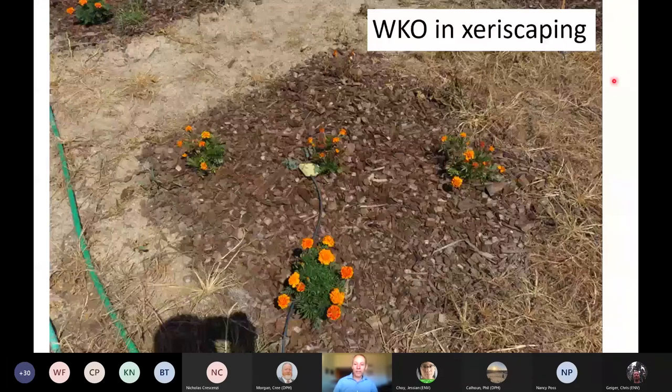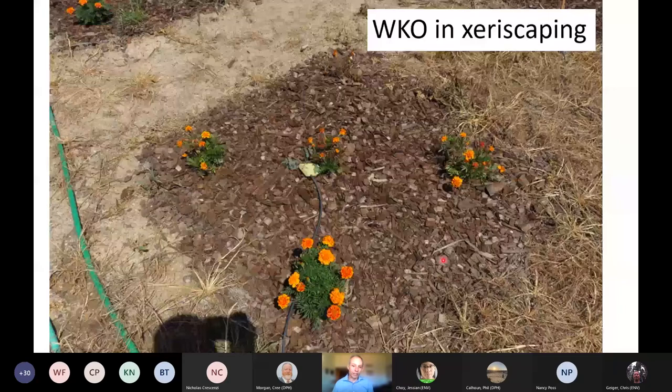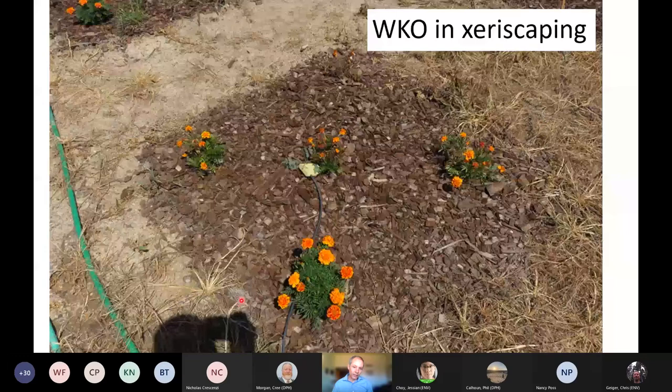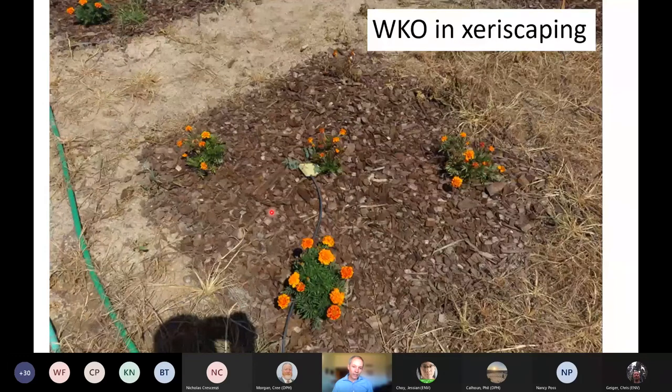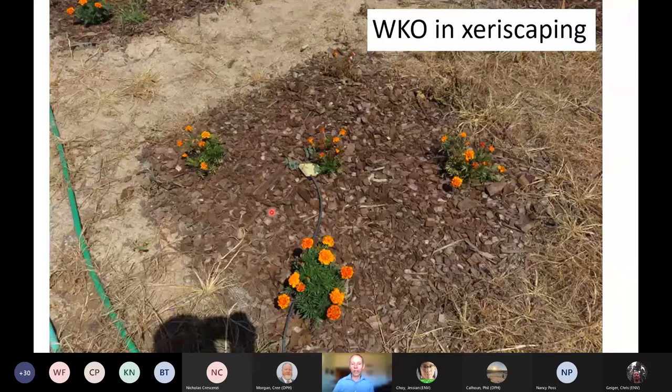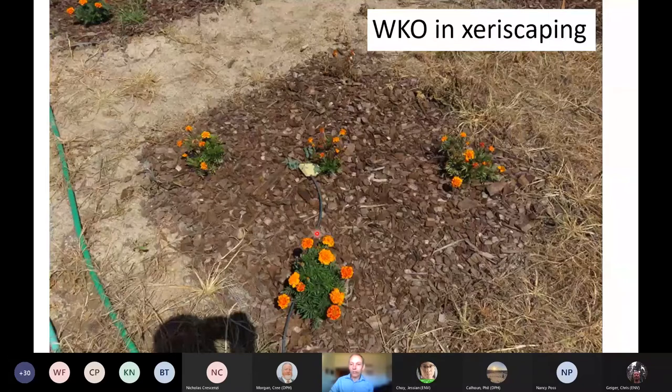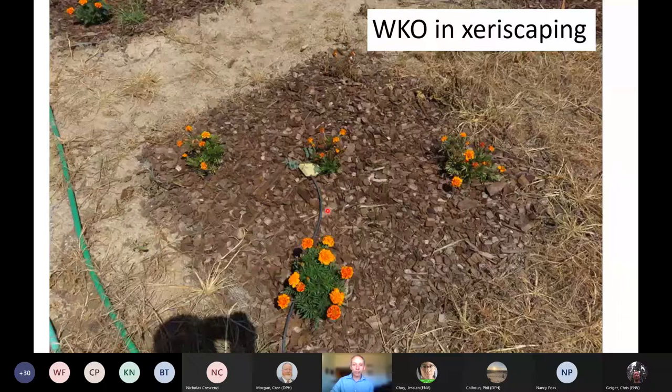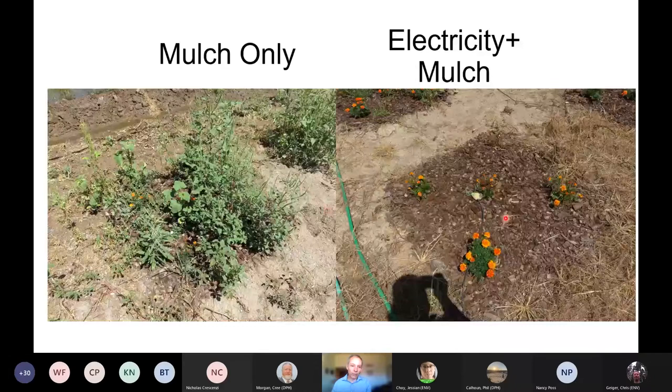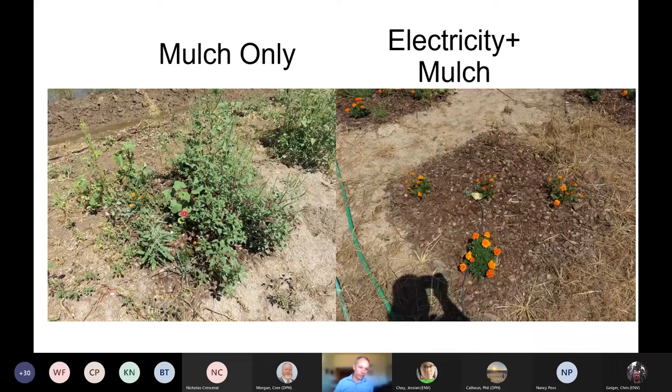Okay, so imagine that screen that you just saw over the pot of barley, and now we're using that outside in a real application in xeriscaping. So down here you can see a little bit of screen that's exposed. This is covered up with mulch, and we're preventing weeds from growing into this plot. We have some marigolds planted in little holes that are cut out in the screen, and this thing in the middle is just a soil moisture probe that's going in there. So that's one way that we've been using it. Here's, this is the same picture on the right, but this is a plot with only mulch in it. So just to demonstrate that it is electricity having the effect, and not only the mulch. So these are all weeds. You can see the marigolds in there being overrun by a variety of different weeds.